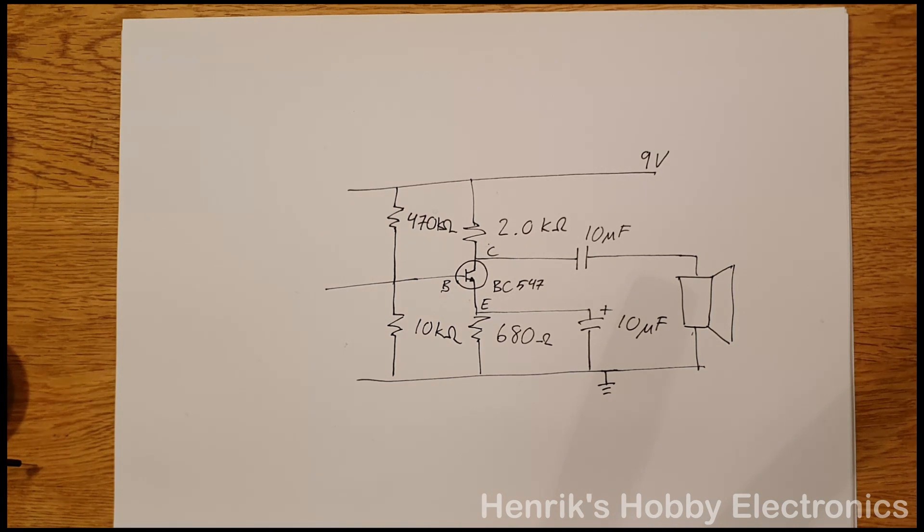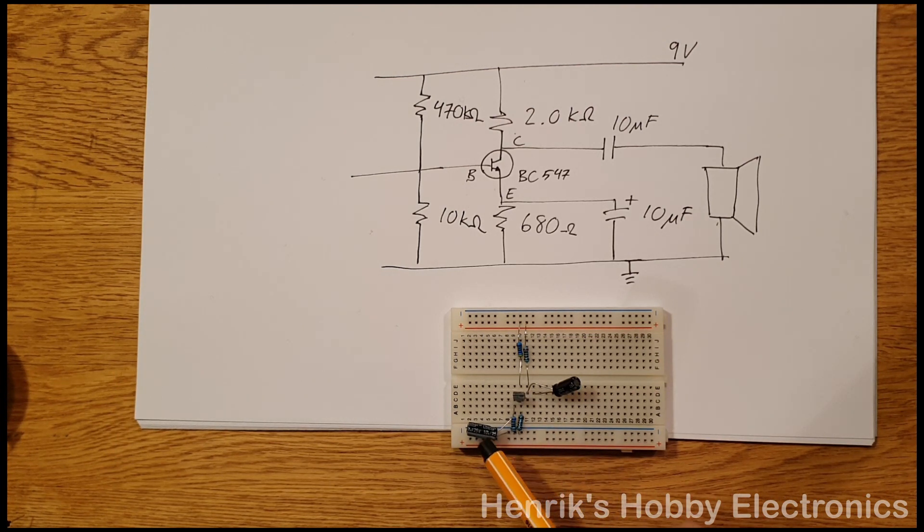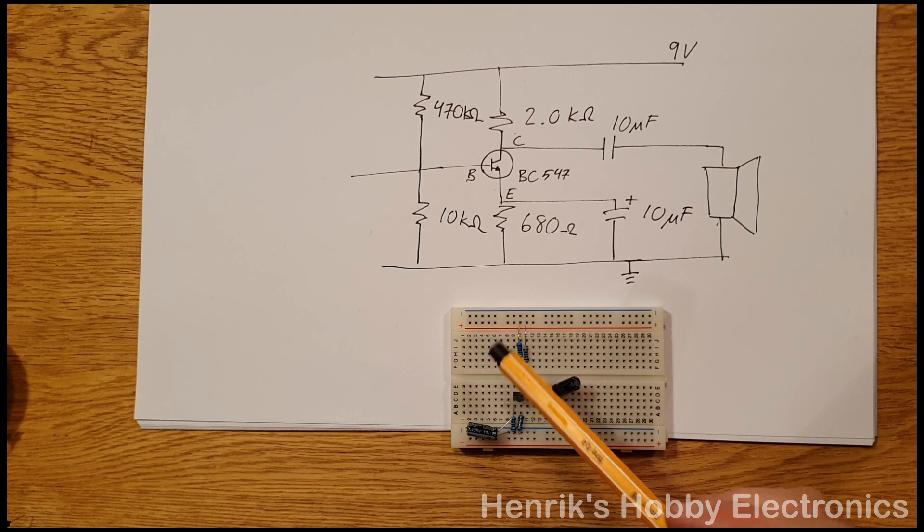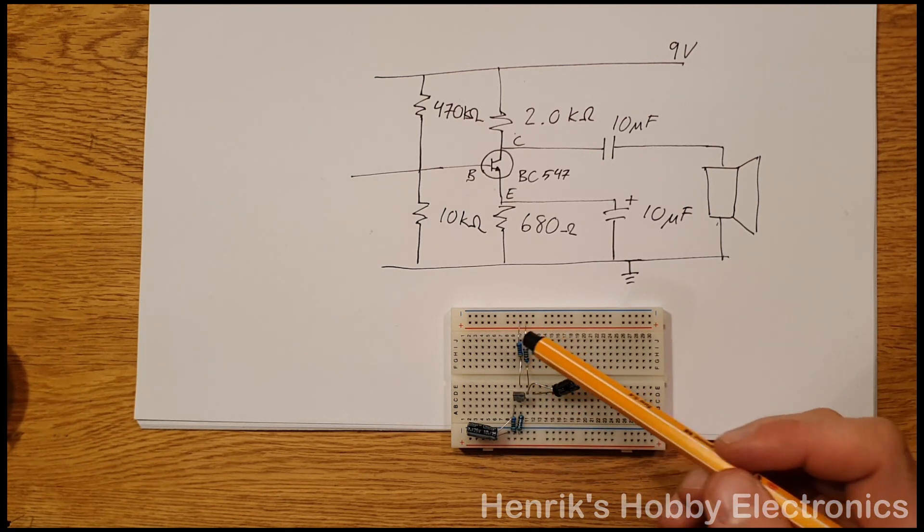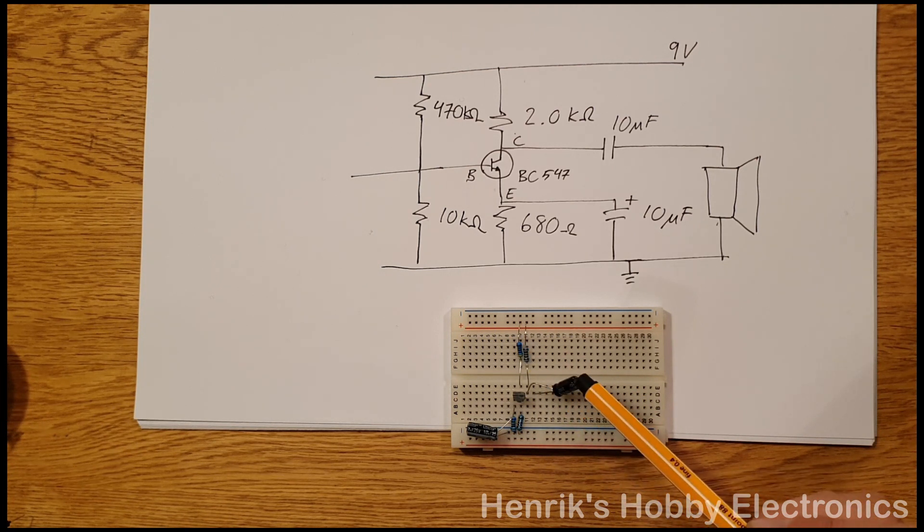So let's have a look at the breadboard now. Here we have the transistor. On the emitter side we have the bypass capacitor and the resistor. On the base we have two resistors and on the collector side we have a resistor and the output capacitor.